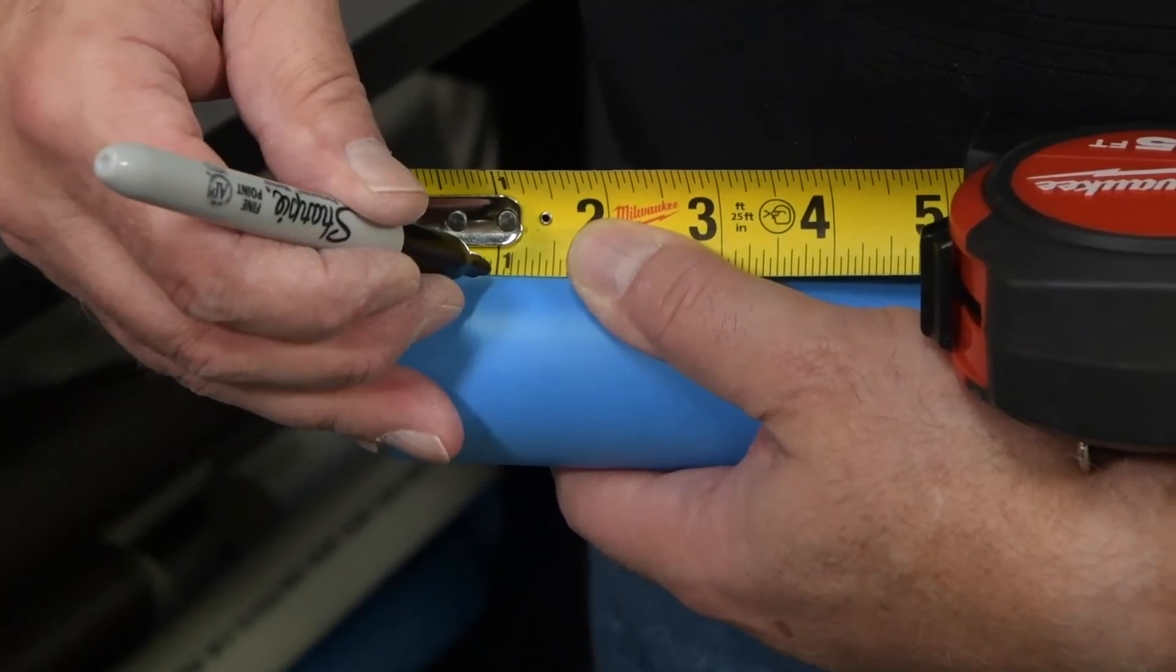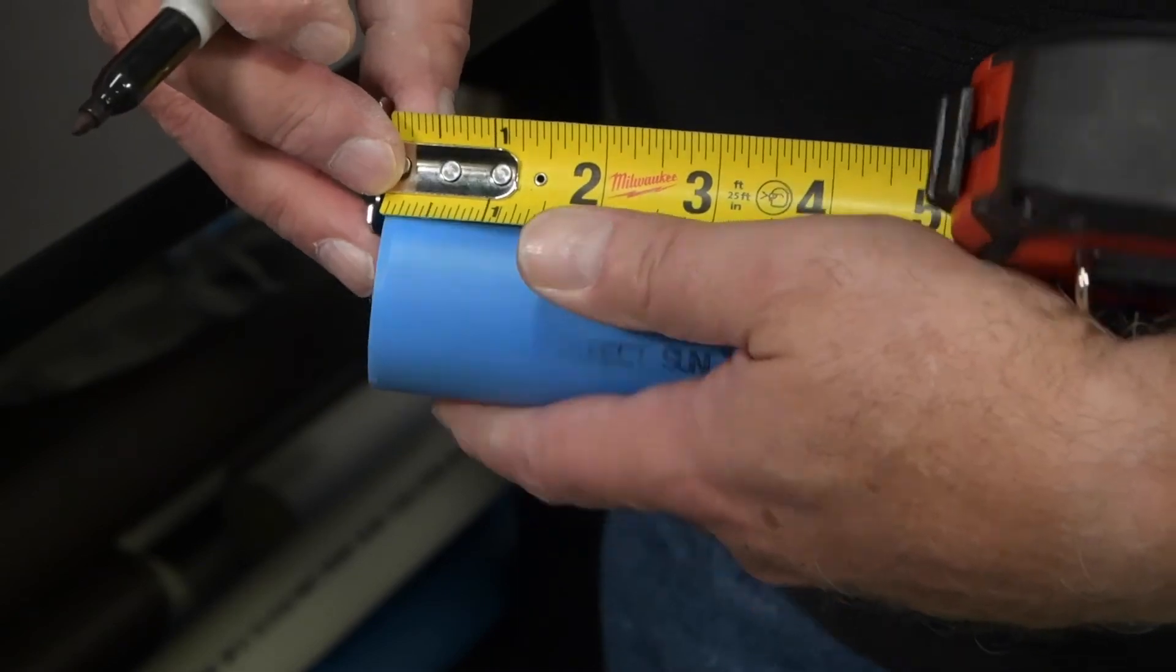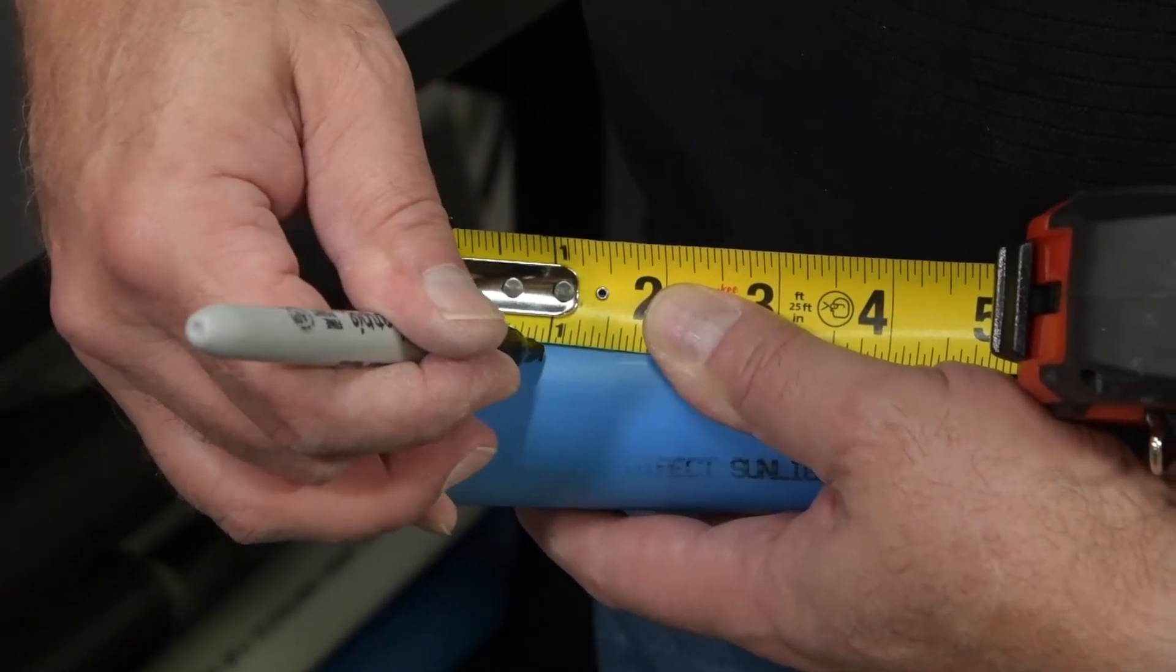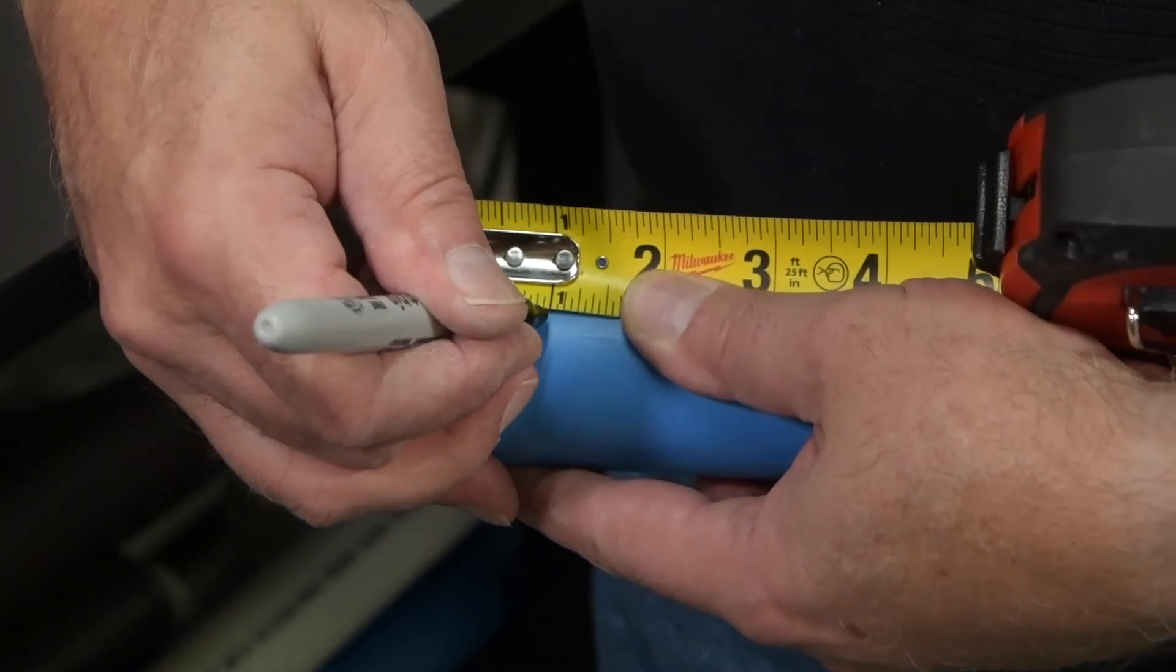Measure the depth of the fitting socket to be fused and subtract 1/16th of an inch. Transfer the fitting socket measurement to the end of the pipe to be fused. Mark the pipe so the measurement will be seen when inserting the pipe into the tool head.